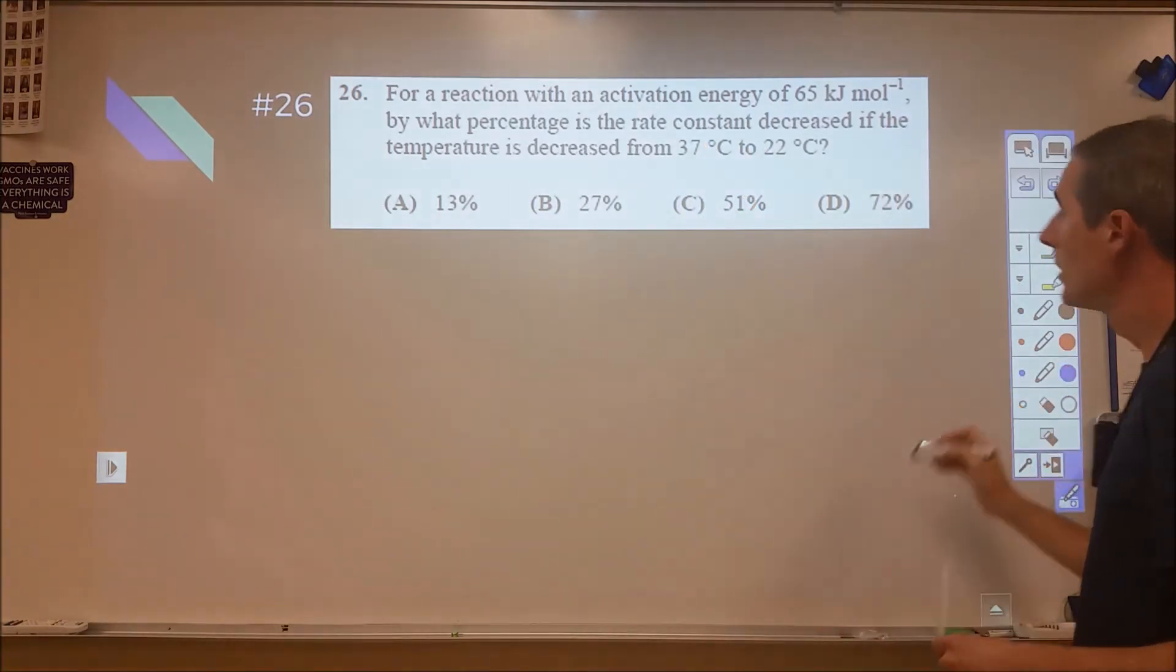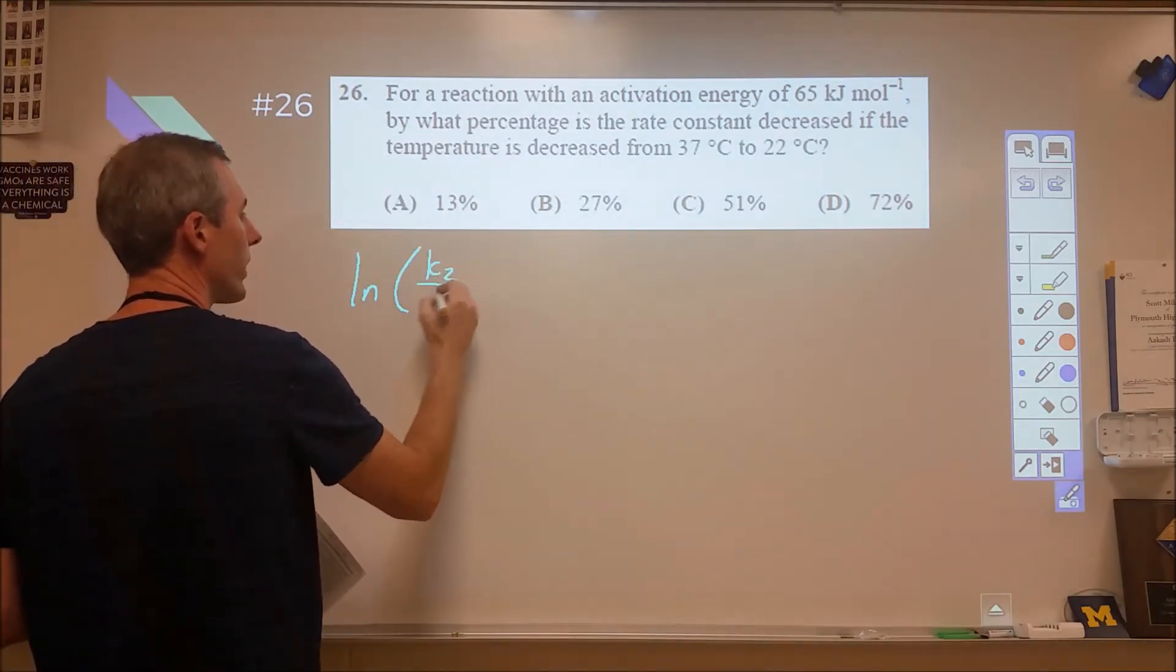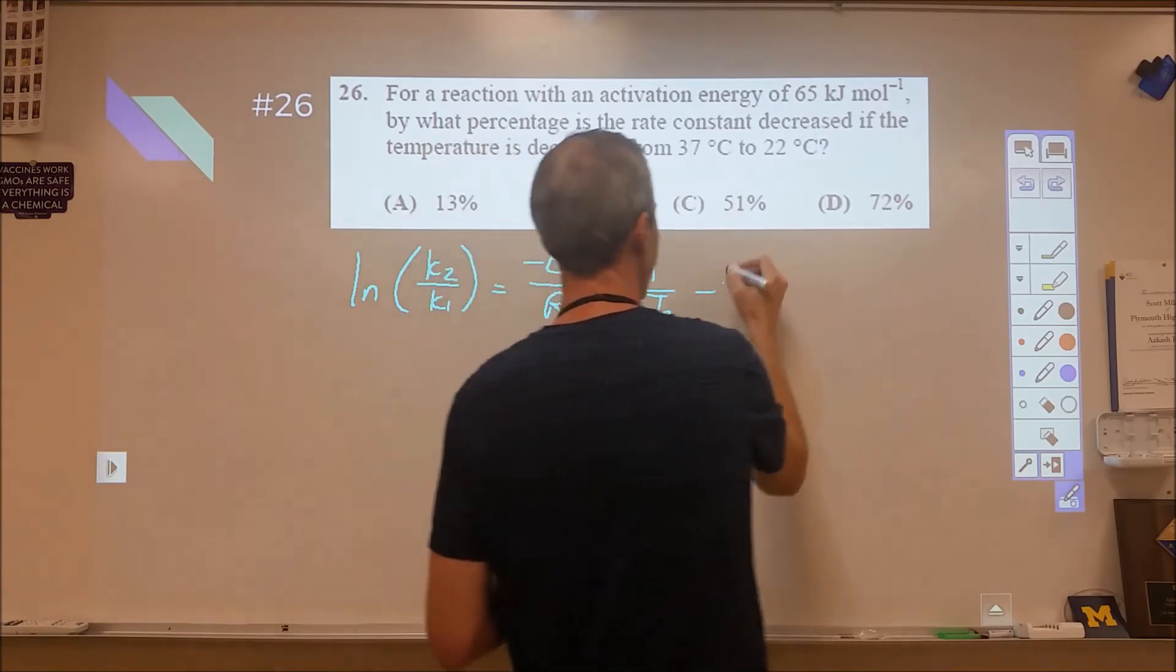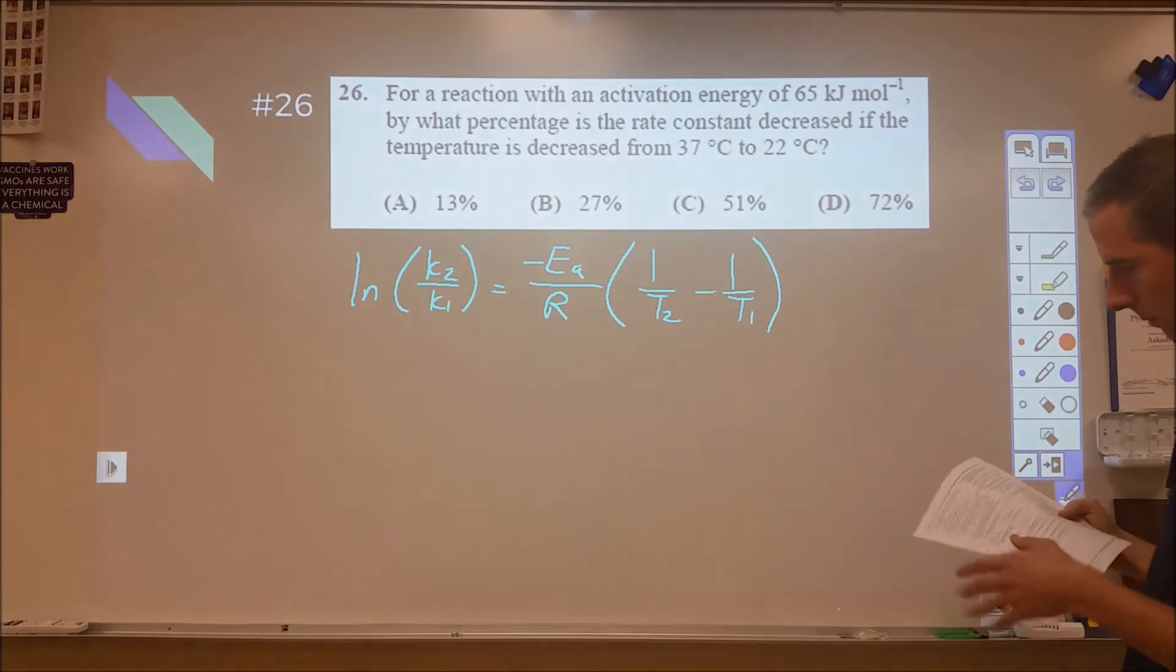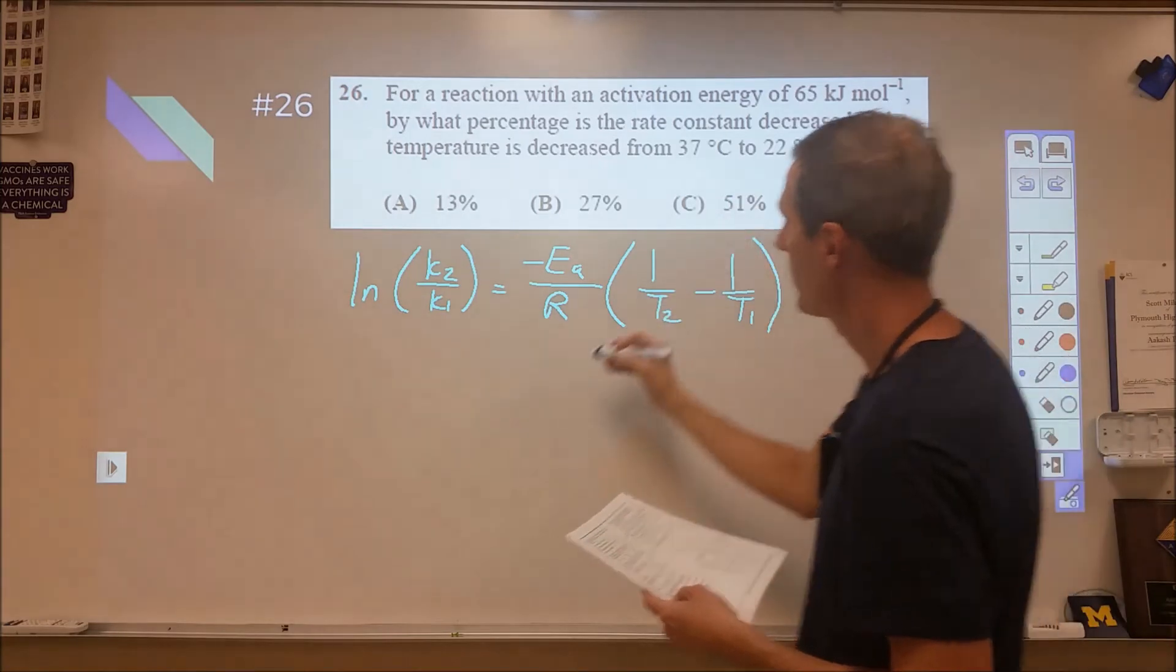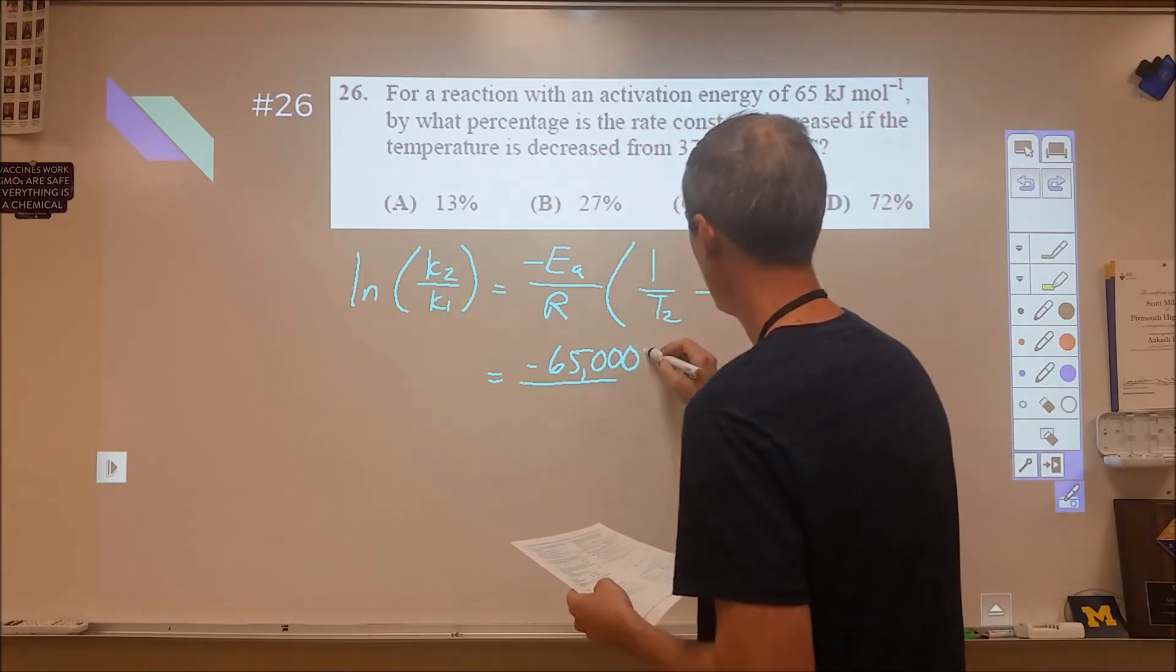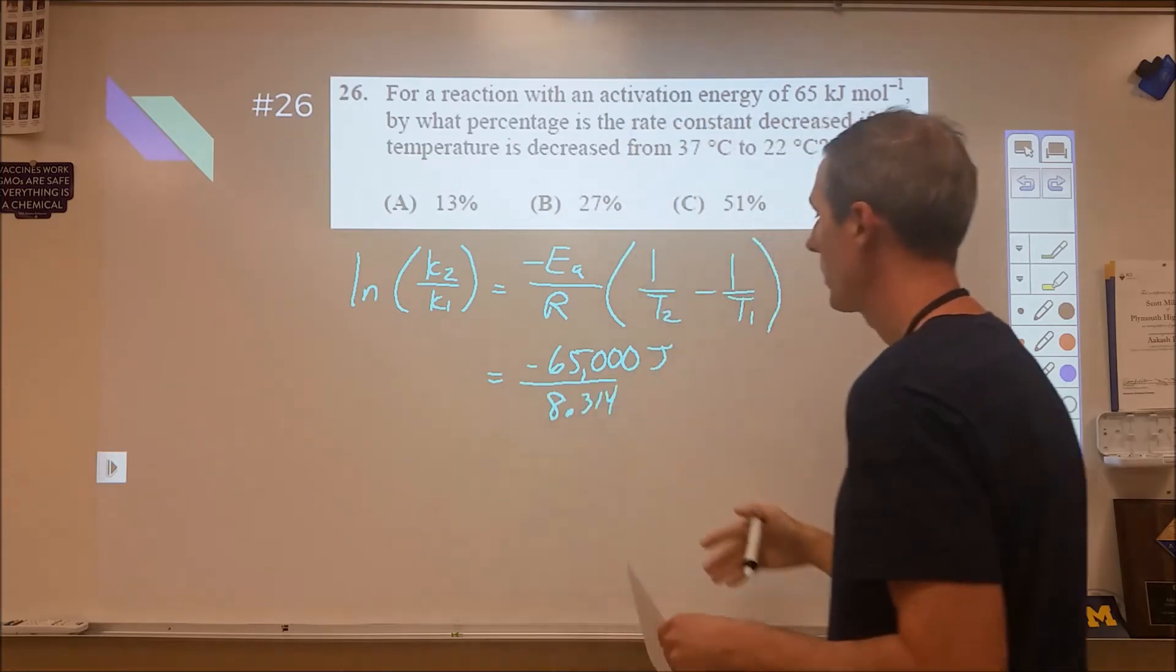Activation energy. Our calculation for this is natural log of K2 over K1 equals negative Ea activation energy over R times one over T2 minus one over T1. When we plug this in, we're going to plug in our activation energy of 65 joules per mole. And then in order for that to work, we need to make these equivalent units. So it matches my 8.314 joules per mole kelvin.